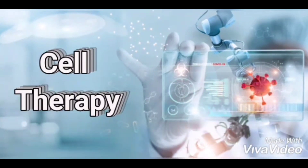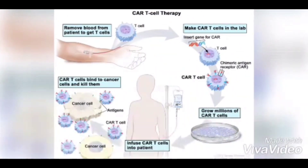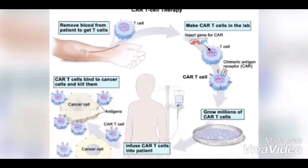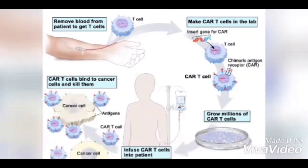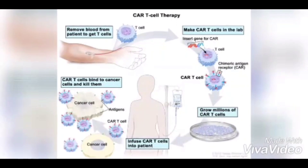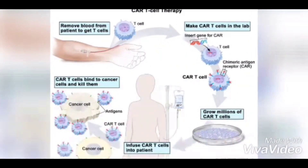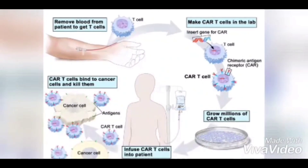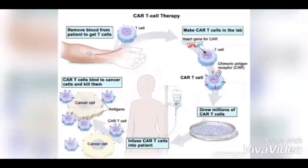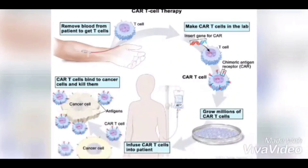So what is cell therapy? Cell therapy is a treatment that uses viable cells, which are injected, grafted, or implanted into a patient in order to effectuate a medical effect. Cell therapy is applicable to some types of cancer and neurological diseases such as Parkinson's disease, amyotrophic lateral sclerosis, spinal cord injuries, and diabetes.